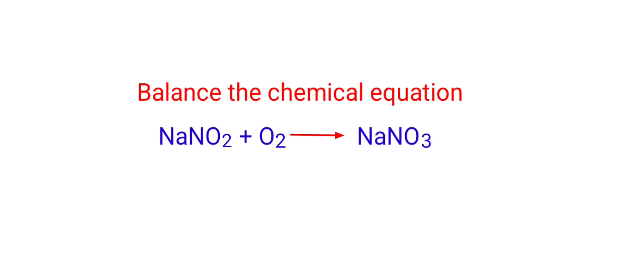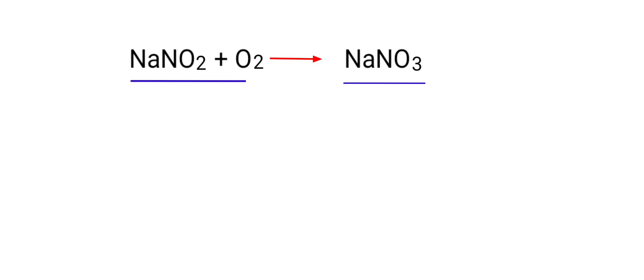Balance the chemical equation: Sodium Nitrite plus Oxygen gives us Sodium Nitrate. In this equation, the reactants are Sodium Nitrite and Oxygen, and the product is Sodium Nitrate.